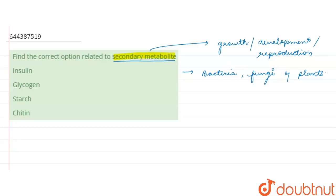These secondary metabolites can be important for human beings. From the options given to us - insulin, glycogen, starch and chitin.